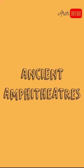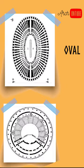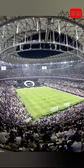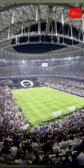Ancient Roman amphitheatres were oval or circular in plan, with seating tiers that surround the central performance area, much like a modern open-air stadium.